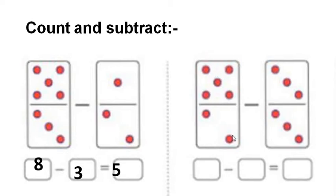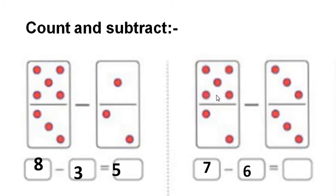There are 7 dots. Out of 7 dots, I have to cut 1, 2, 3, 4, 5, and 6 dots. Then, how many dots will remain? After reducing 6, there remains 1 dot, which I write in the answer box. So 7 minus 6, I get number 1.